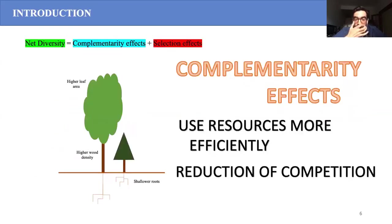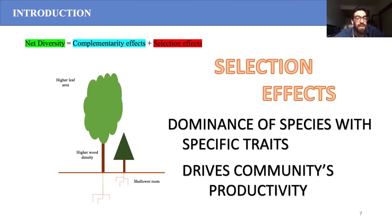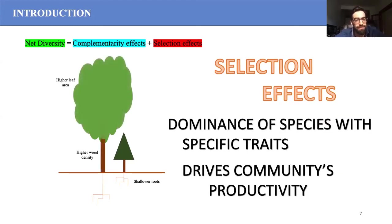This is important because afforestation and reforestation programs now attract great interest to fight global change, making it essential to better understand the role of diversity in young developing communities. To explain diversity effects, two mechanisms acting simultaneously have been proposed: complementarity effects, which state that mixing species with contrasting life strategies and functional traits allows trees to use resources more efficiently and reduce competition; and selection effects, where the dominance of one or few species with specific functional traits drives community productivity.